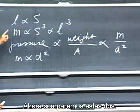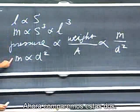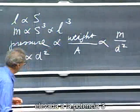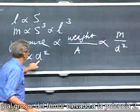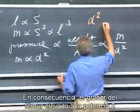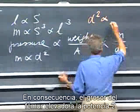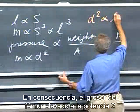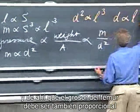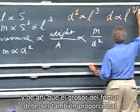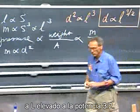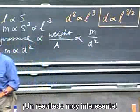Now compare these two results. Mass is proportional to L³ and also proportional to D². Therefore, D² must be proportional to L³, and therefore the thickness of the femur D must be proportional to L to the power three-halves. A very interesting result.